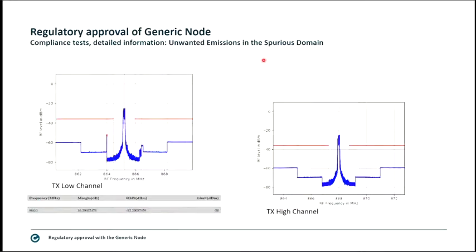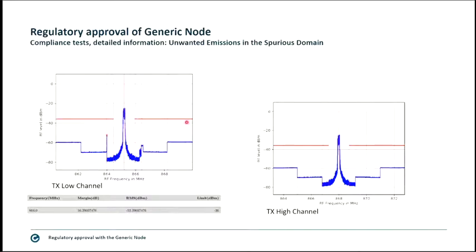The next test is unwanted emission in the spurious domain, concentrating on the carrier frequency itself. TX low channel is close to 865 MHz; TX high channel is 868 MHz. Unwanted emission is visible but below the limit — not critical. However, many devices do not pass this test. If the amplitude hits or exceeds the limit, hardware or software changes are required to reduce it. In this case, a margin of 16 dB remains, which is quite fine.